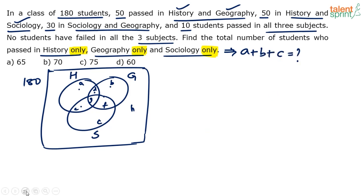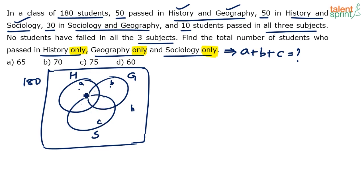Now it's about filling the values into the regions. The strategy is to always start with the innermost region first, then the three leaves, then the outermost regions — it's an inside-out operation, which makes it easier. The problem says 10 students passed in all three subjects, which corresponds to region G, so G = 10. Now look at the other values given.